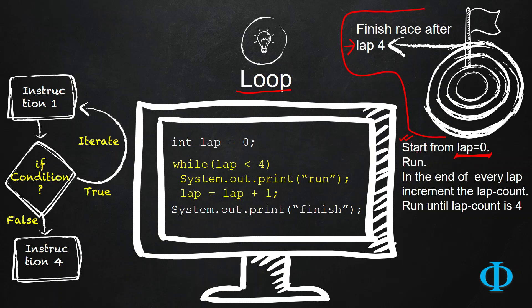Then you start running. Whenever one lap is completed, at the end of that lap, you increment the lap count. So you started from lap 0. After finishing the next lap, you incremented the lap count to 1. After finishing the next lap, you incremented the lap count to 2. After finishing the next lap, you incremented the lap count to 3.